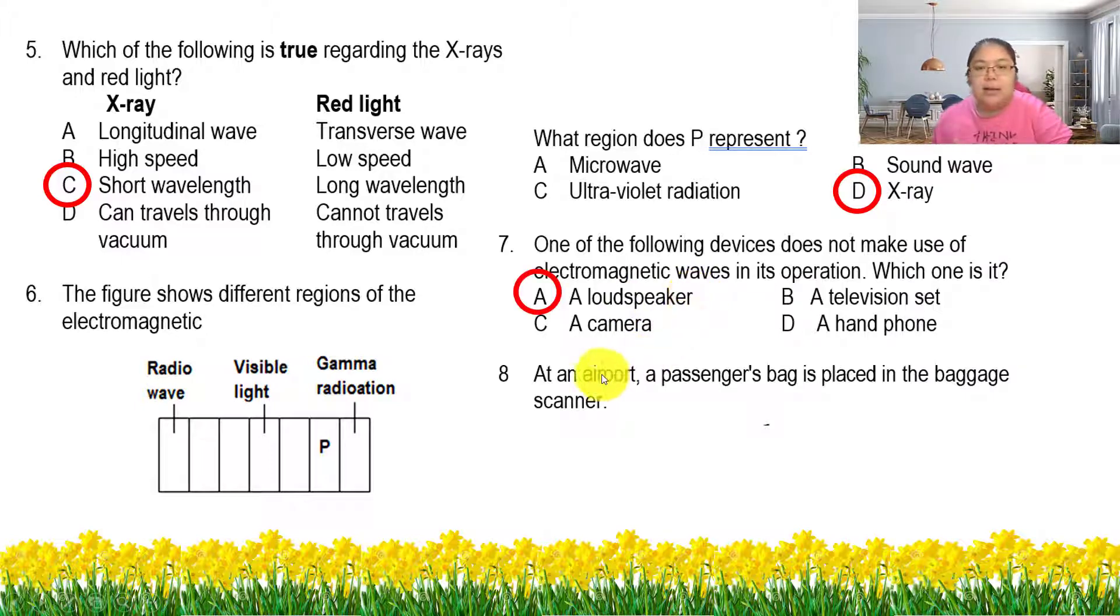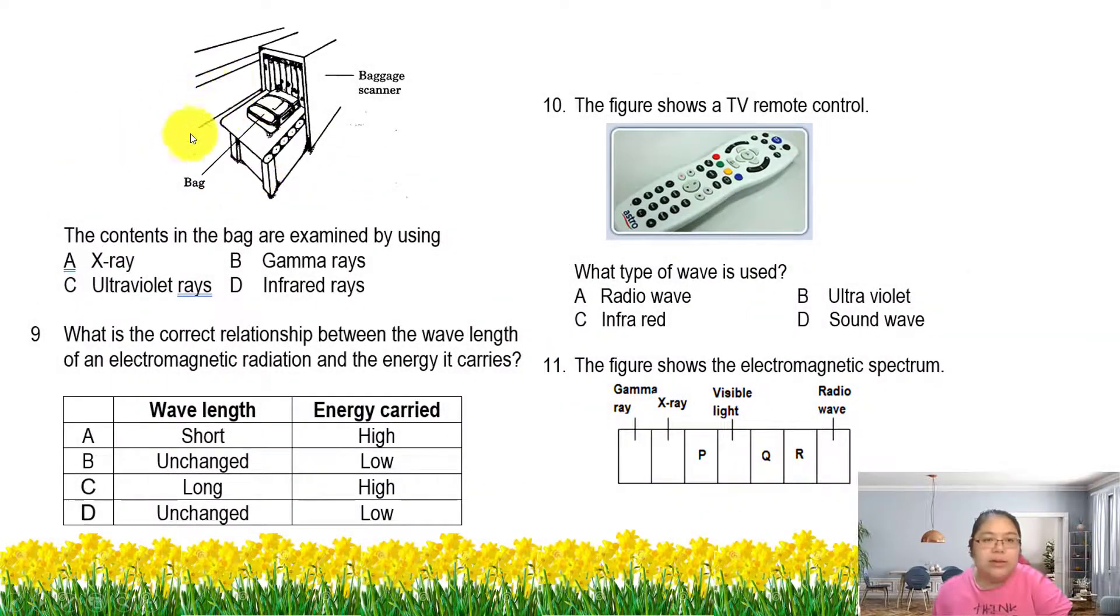Handphone is using radio. The loudspeaker, no, because loudspeaker is related with sound wave, so the answer is A. Number eight, at a port, a passenger bag is placed on the baggage scanner. They ask you, the bags are examined by using X-ray. Number nine, which one is the correct relationship between wavelength and energy?